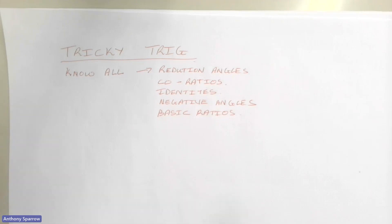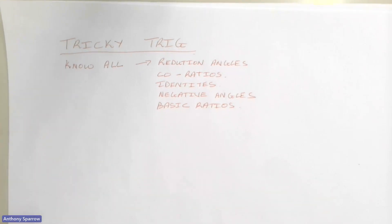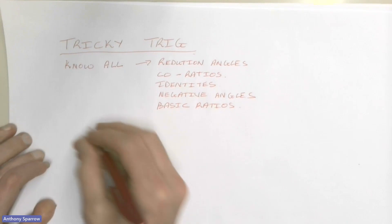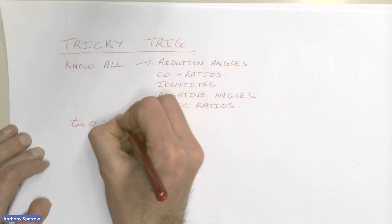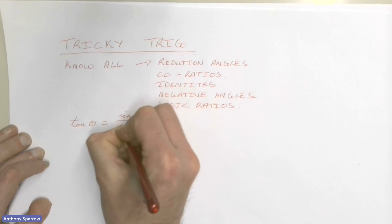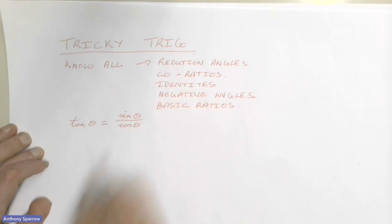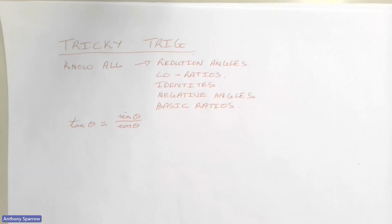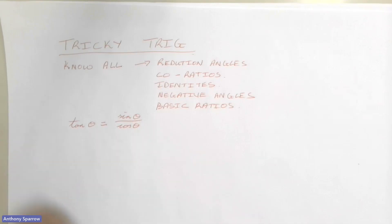But if you don't, you're really going to be starting on the back foot. A few tricks for those tricky papers: if in doubt, change tan to sine over cos. We know that tan θ equals sin θ over cos θ — that is a common identity you're supposed to know. If you ever get stuck with an equation or an identity, one of the easiest things to do is change all your tan θ into sin θ over cos θ. That normally helps.